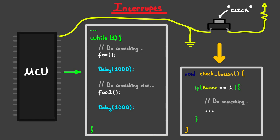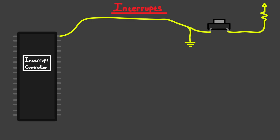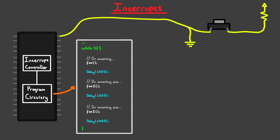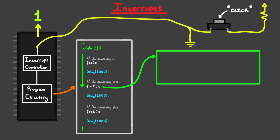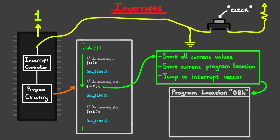Also, don't confuse this concept with multi-core hardware — there isn't a second core that executes this program. The way interrupts work is that there is an interrupt controller in your microcontroller connected to your program circuitry. Whenever its input goes high, the microcontroller will execute a special instruction where it automatically stops whatever it's doing, stores the values it's working on along with its current program location somewhere else, and jumps to a predetermined location in its program. This location is referred to as the interrupt vector, and it's hardwired — not something you can change. Remember this term; I'll use it a lot.